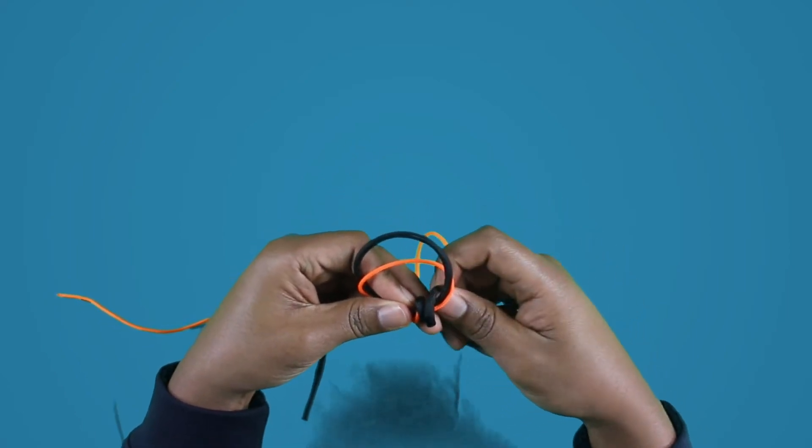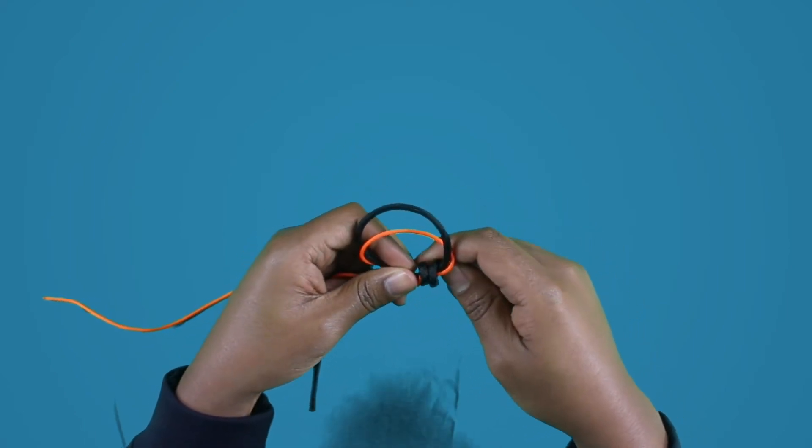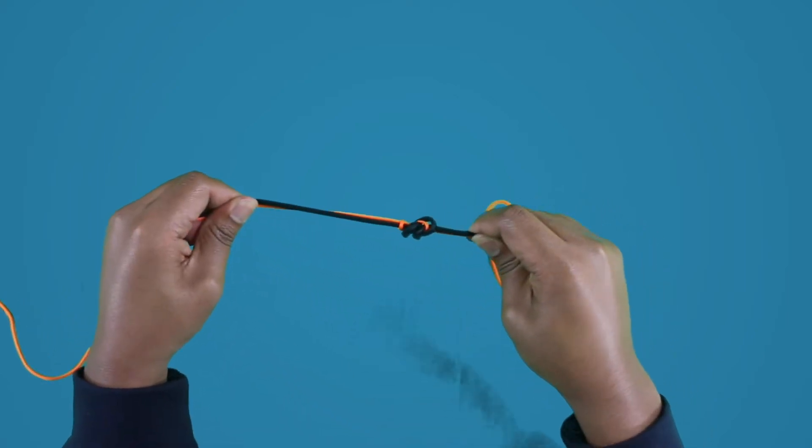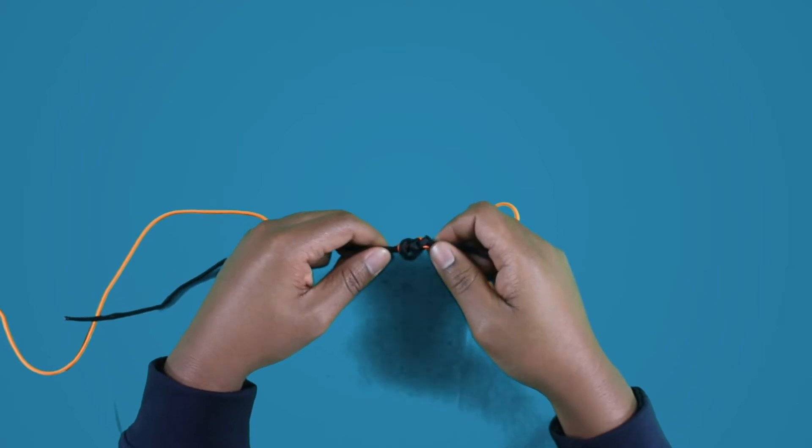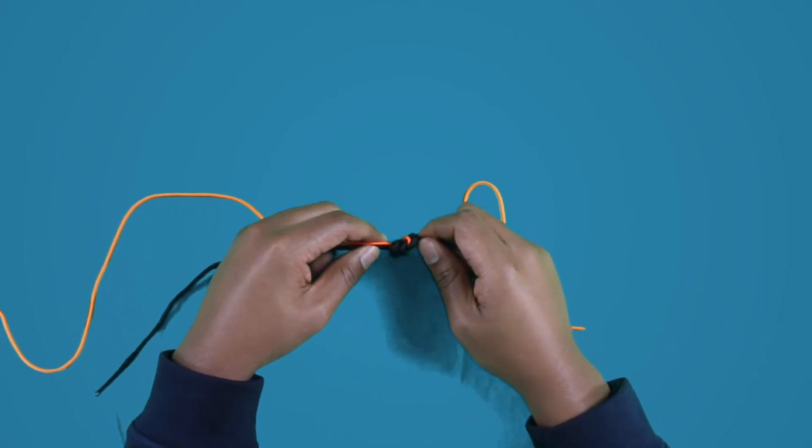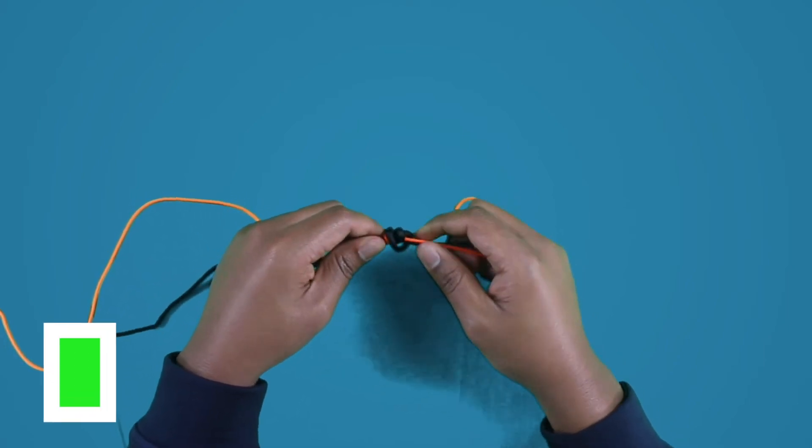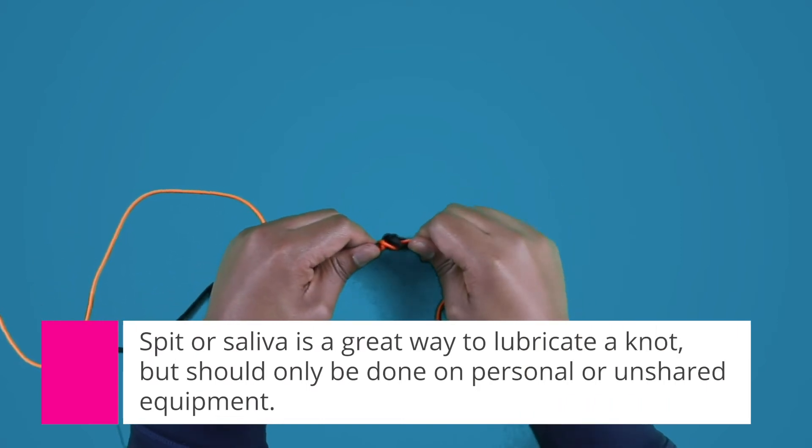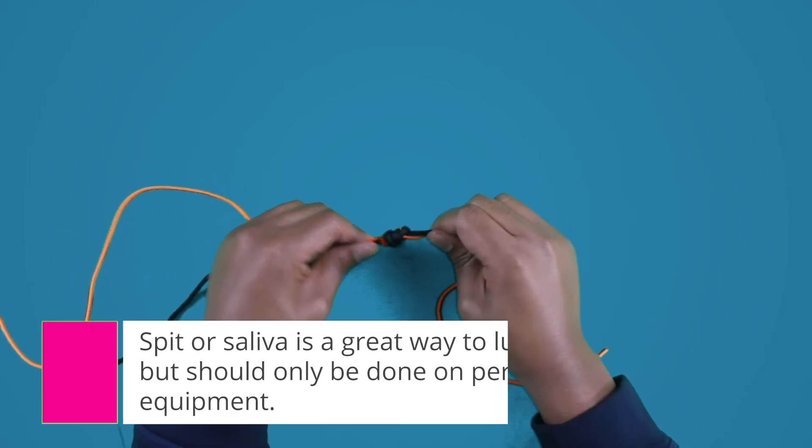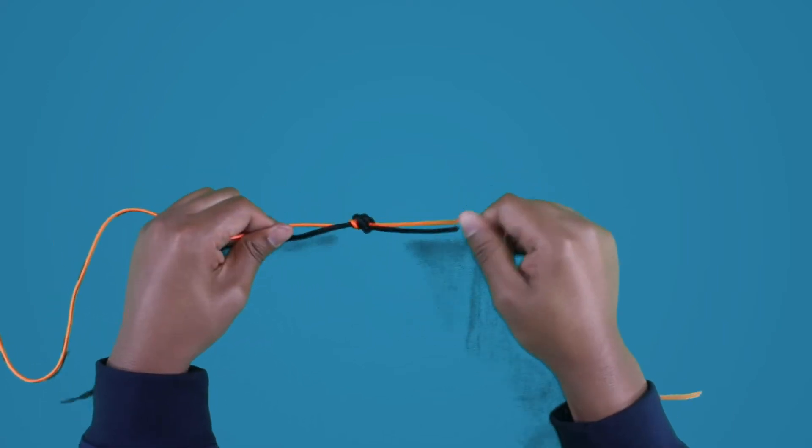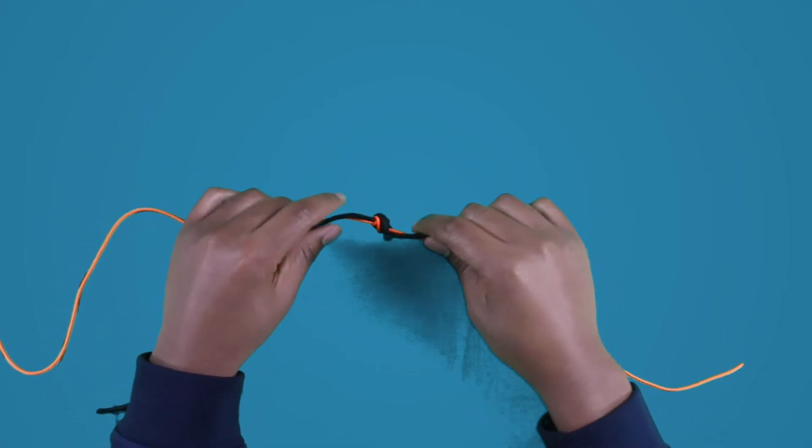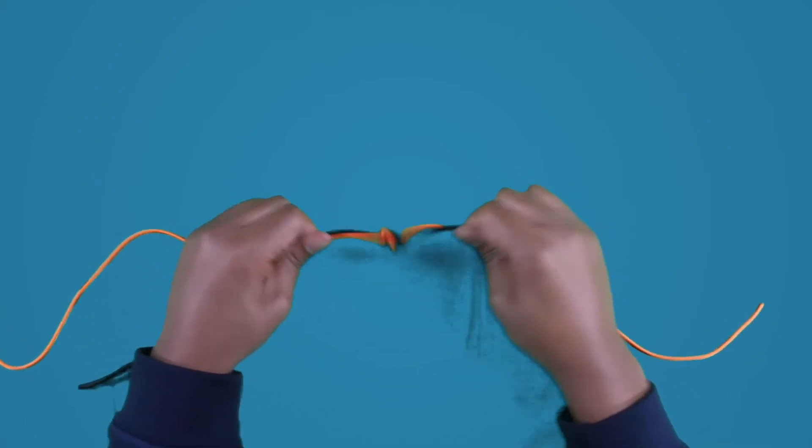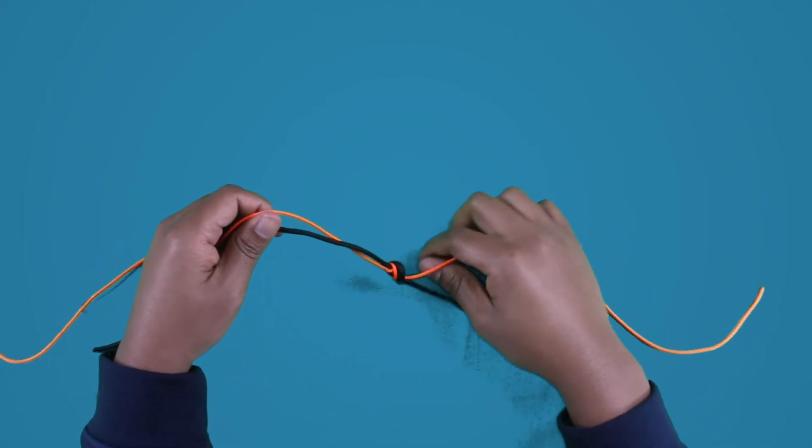Good. Okay. And then just slowly snug it up. Tighten it up. And before it comes tight, then is a good time to lubricate the knot. When you pull it up tight, then that makes a really strong knot. And you will find that even though the orange line in this case is much thinner than the other one, this knot will hold both lines well.